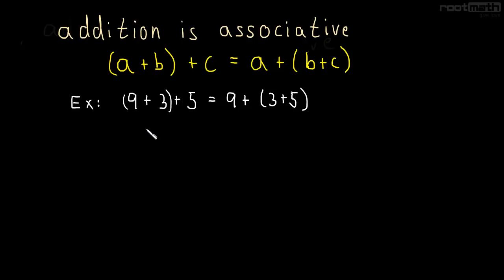So 9 plus 3 is 12, plus 5, and then on the other side we're going to get 9 plus 8. 12 plus 5 is 17, 9 plus 8 is 17, and so we can see the associative property in action. It doesn't matter where we put the parentheses, both sides are equal.